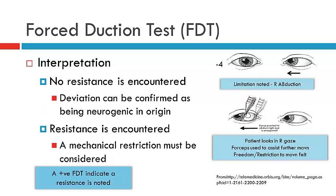In interpreting the findings: resistance encountered indicates a mechanical restriction, and no resistance indicates a neurogenic issue. When we record a positive forced duction test, we are indicating that resistance has been noted and there is a mechanical restriction. So in clinical notes, if you see a positive FDT, that indicates a mechanical restriction is present.